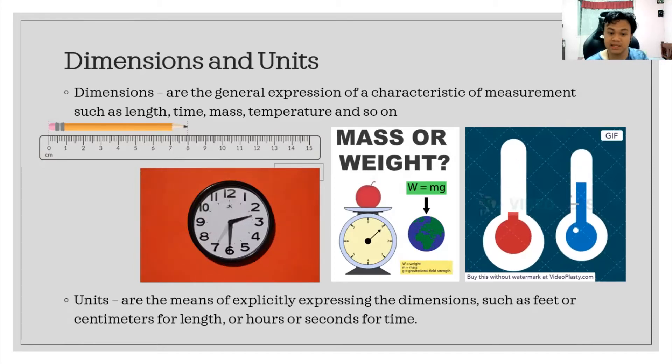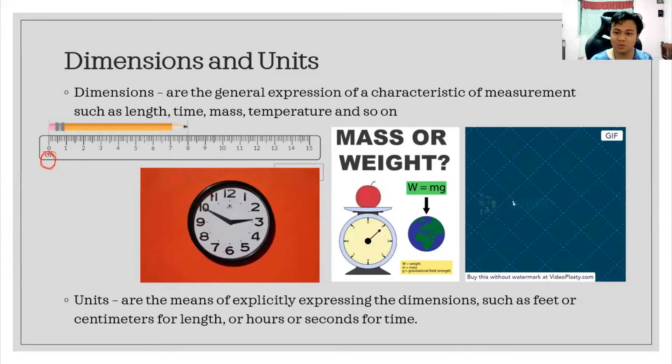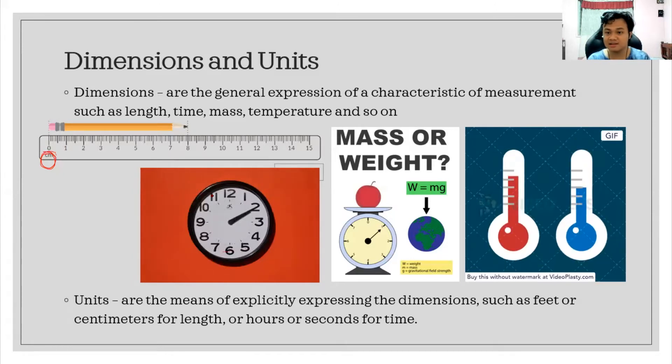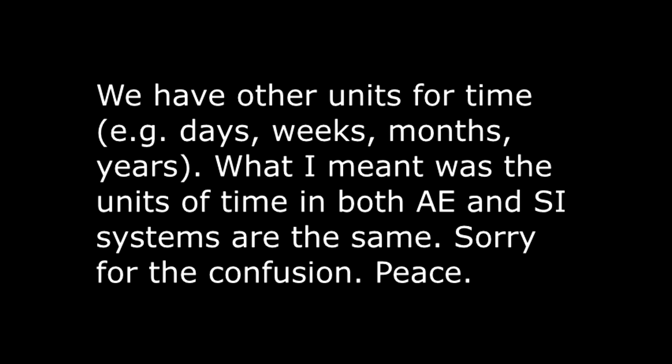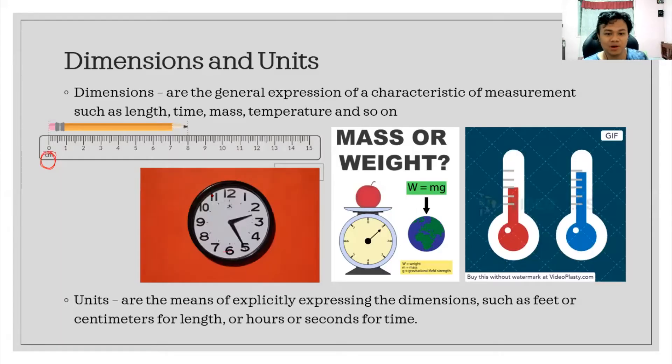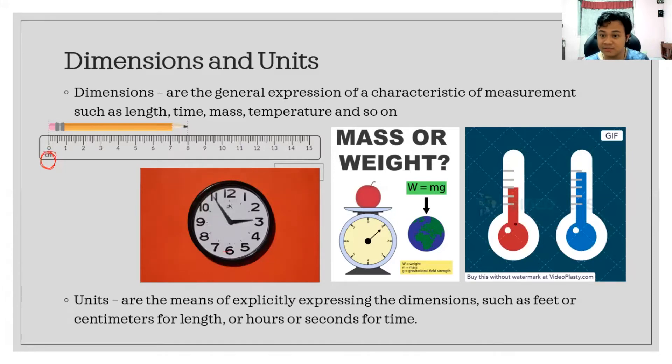They are the means of explicitly expressing the dimensions such as height or length. For example, in our ruler here, you can see the unit centimeter. But if you can notice, the rulers nowadays have exactly one foot of length. For time, we have hours or seconds, there are no other units of time that we have. For mass or weight, we have kilograms or pounds. And then for temperature, we have degrees Celsius, degrees Fahrenheit, Kelvin, and degrees Rankine.